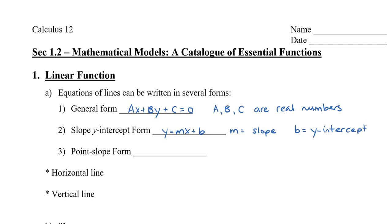The last form is called the point-slope form, and this is written as y - y₁ = m(x - x₁). The points x₁ and y₁ is a point on the line.